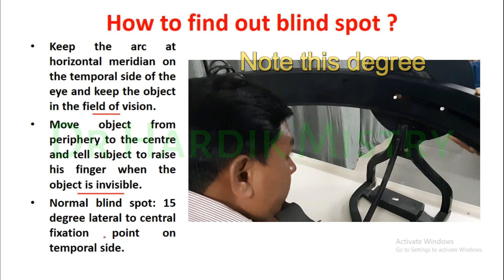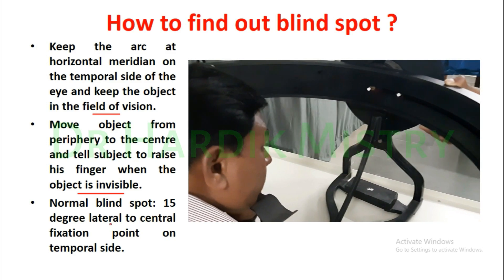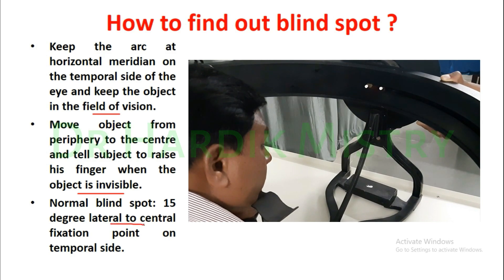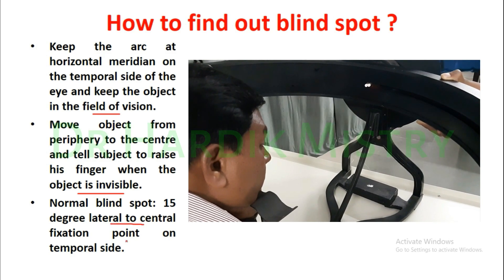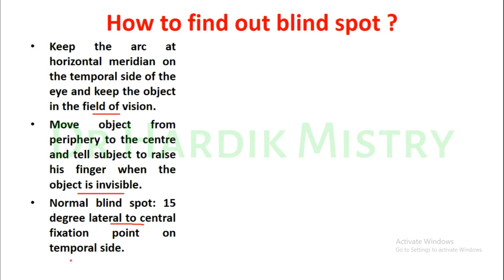The normal blind spot is 15 degrees lateral to the central fixation point on the temporal side.